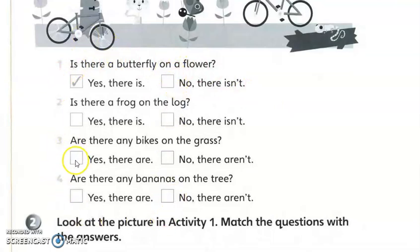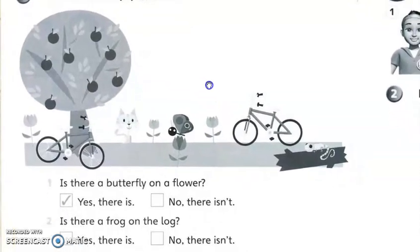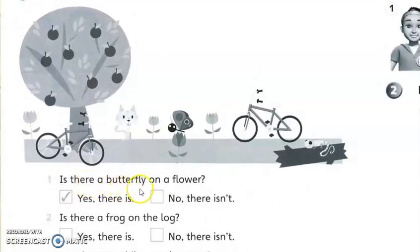Okay, you see for the first question: Is there a butterfly on a flower? Adakah terdapat rama-rama pada bunga tersebut? Mana gambar ni? Yang ni. Okay, alright. Rama-rama ni di atas bunga ni. So the answer is yes, there is.